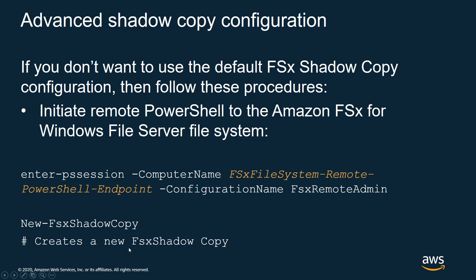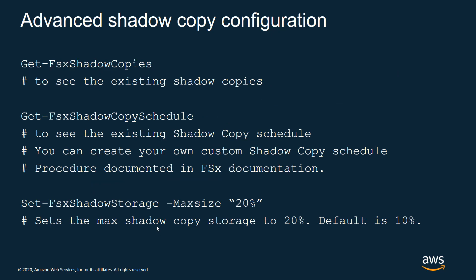Some useful commands to highlight: New-FSxShadowCopy is very useful if you want to take a shadow copy backup immediately — by default backups happen at 7 AM and 12 noon UTC, but this lets you trigger one on demand. Get-FSxShadowCopies lets you see the shadow copies that have been backed up. You can also view the current FSx shadow copy schedule, and change the FSx shadow storage size — for example, setting it to 20% instead of the default 10%.